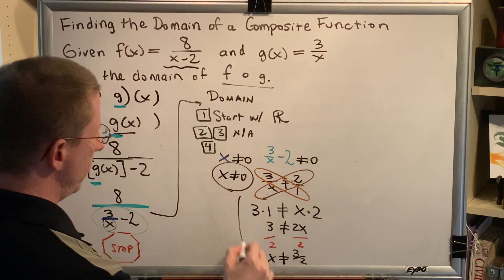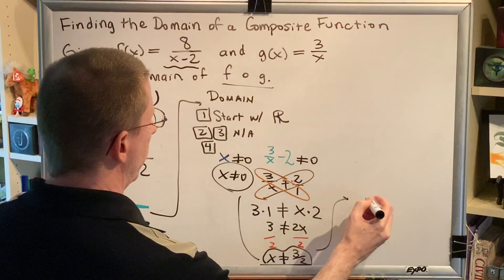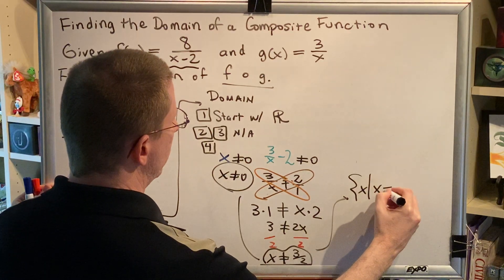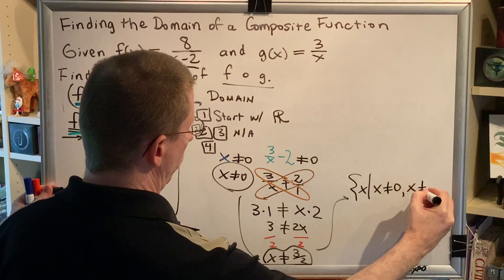So putting these together gives me my domain for this problem. The final answer is the set of all x such that x is not equal to zero and x is not equal to three halves.